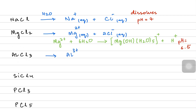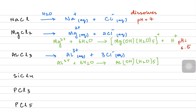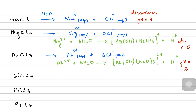When aluminium chloride dissolves it forms aqueous aluminium ions and three chloride ions. Each aluminium ion behaves similarly to magnesium, receiving lone pairs from water molecules to form a complex ion with a positive charge, and hydrogen ions are released. The pH in this case is about 3, because this complex is formed very readily.